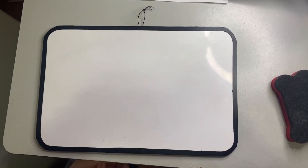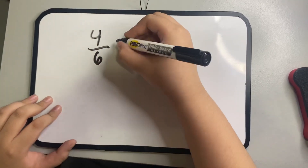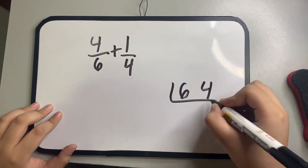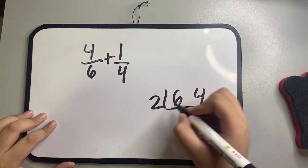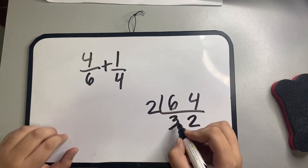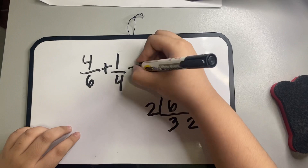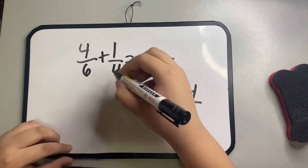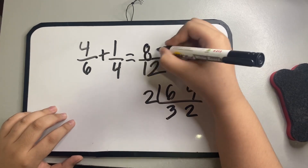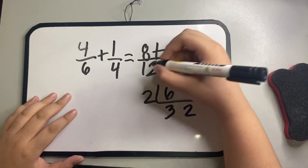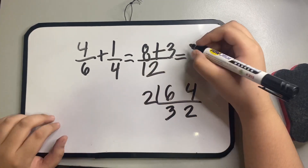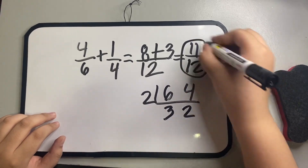Third, addition of dissimilar fractions. Let's solve 4 over 6 plus 1 over 4. First, get the LCD of the denominators. Divide the LCD by each denominator and multiply it to the respective numerator. Add the numerators: 8 plus 3 equals 11, over 12. Here's the final answer.